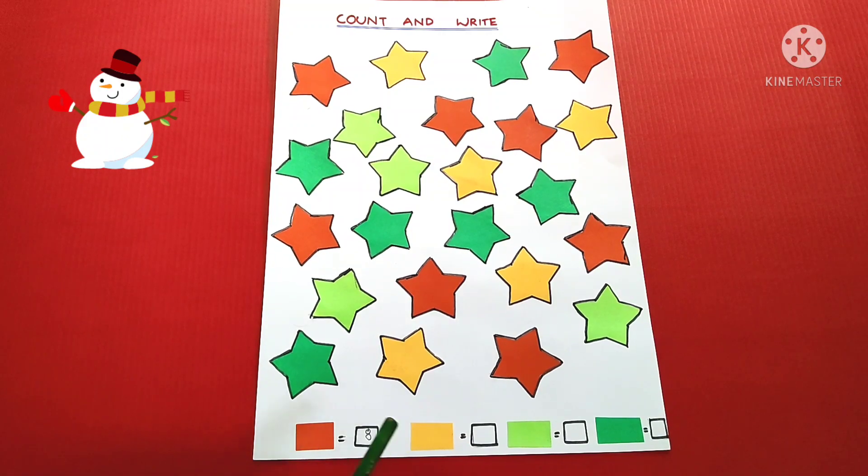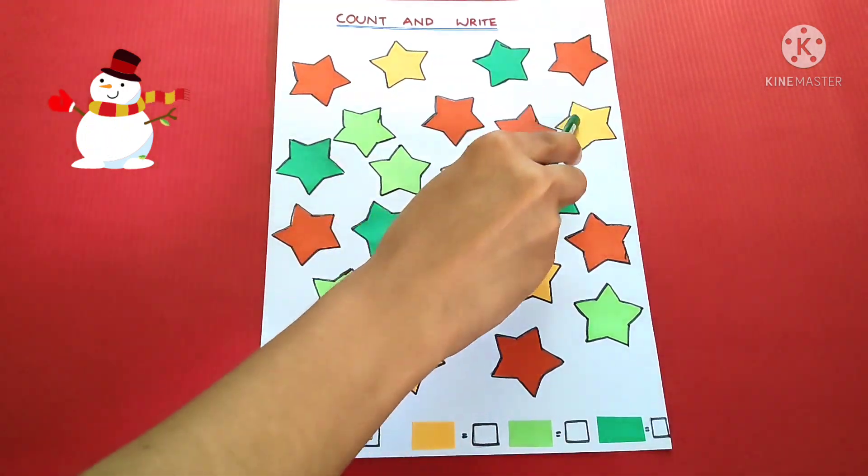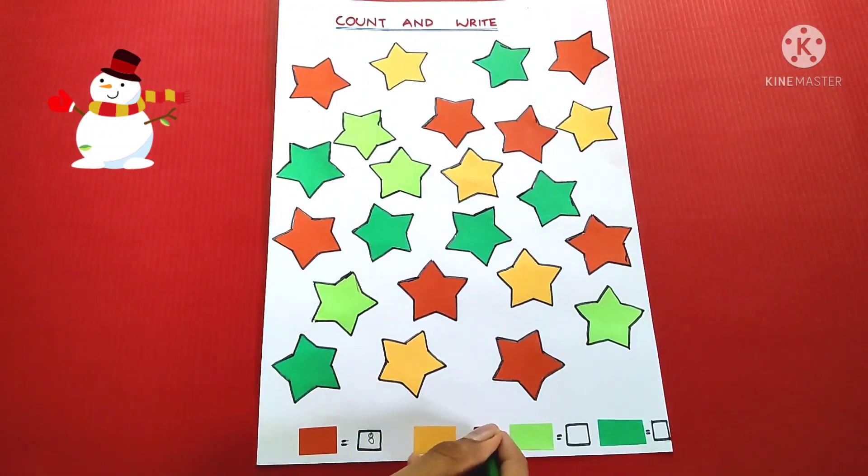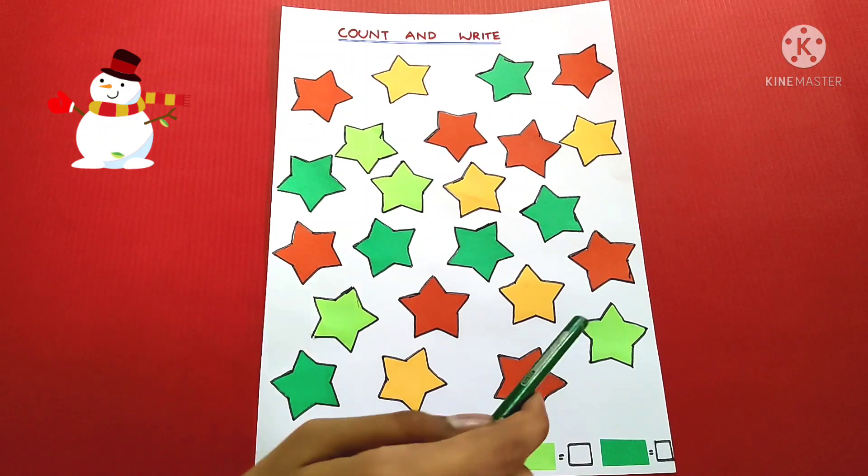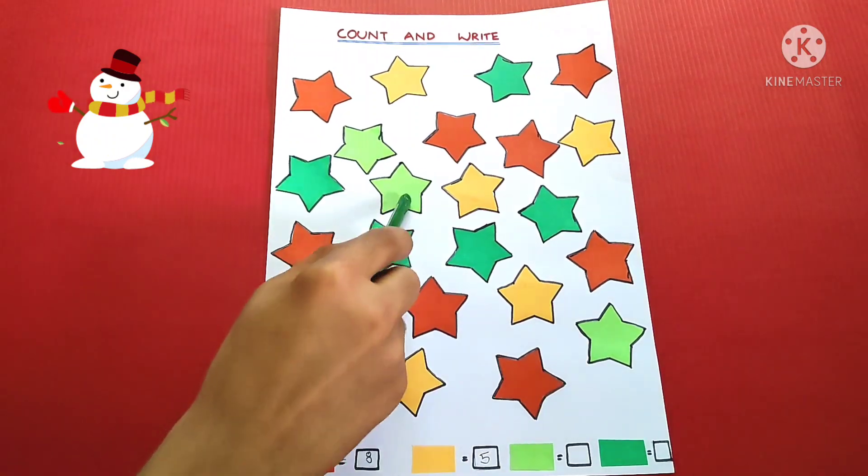Yellow. 1, 2, 3, 4, 5. Light green. 1, 2, 3, 4.